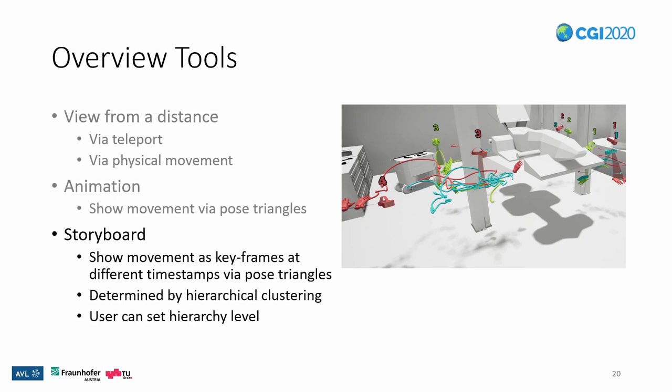As a third method, we have implemented a keyframed storyboard of the movement. We compute a hierarchical clustering for one session to find timestamps that are well spread over time and space. At these timestamps, we display pose triangles for all sessions, providing an overview over the whole motion while also comparing movement of different sessions. For example, we can see that all three sessions start out similar at timestamp 1, while they already deviate at timestamp 2.